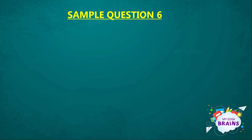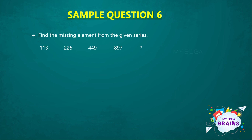Next is sample question 6. The question is: find the missing element from the given series — 113, 225, 449, 897, and the next element is missing. The given options are: option A 1765, option B 1773, option C 1785, and option D 1793. It's a bit difficult question. Let's see how we can solve it.